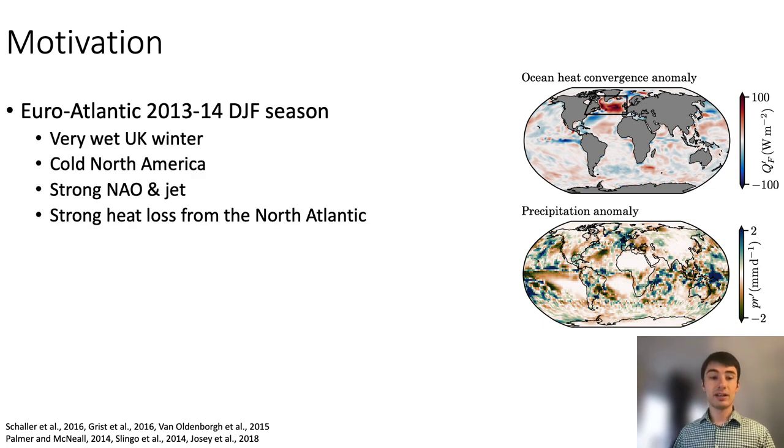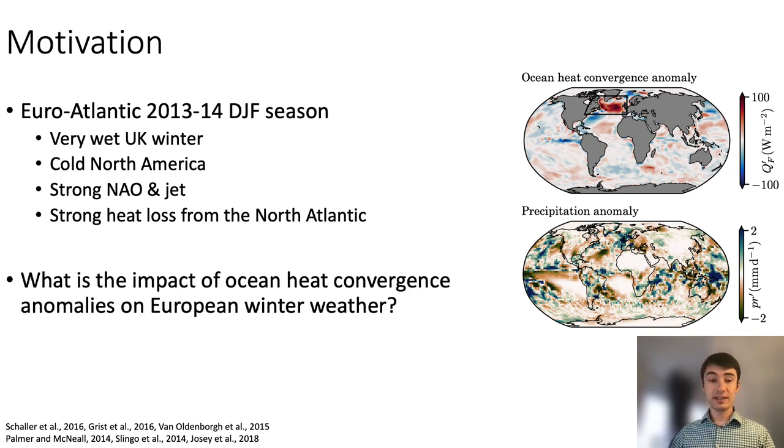This winter was also marked by a cold North America and strong surface heat loss from the North Atlantic. What we are asking is, what is the impact of such ocean heat convergence anomalies on European winter weather?